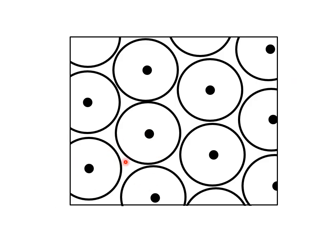In your timeline, next to your gold foil experiment drawing, draw this model of the atom. Ernest Rutherford found that the nucleus is dense and positive and is surrounded by negative electrons. Take a minute and draw this now.